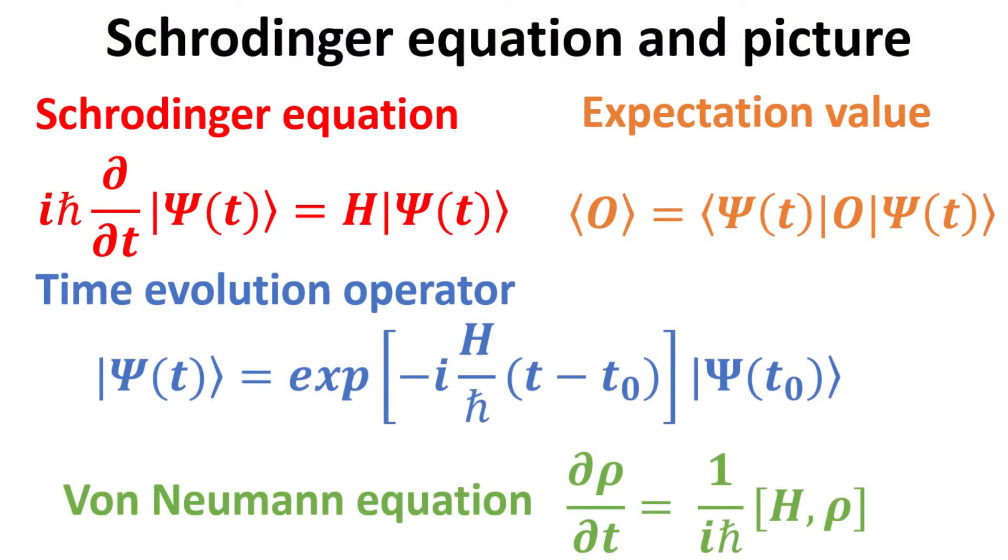The Schrödinger equation is a linear partial differential equation in time, space or momentum that governs the wave functions of a quantum mechanical system. Conceptually, the Schrödinger equation is like the counterpart of Newton's second law of motion in classical mechanics.